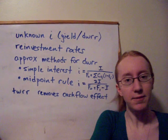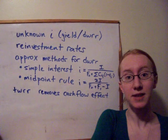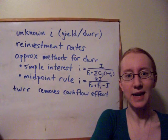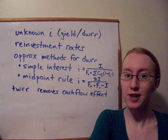So another name for the yield when it's unknown like this is a dollar rated rate of return, because it depends on the individual cash flows involved when we're setting up our equation of value. Obviously if the cash flows change, our yield rate is going to change as well.